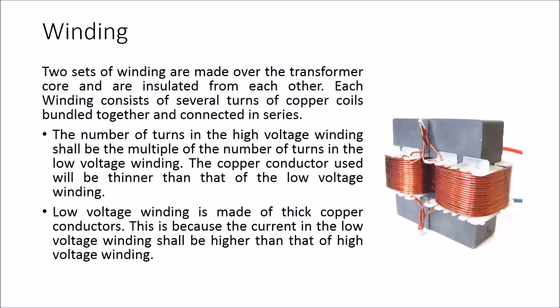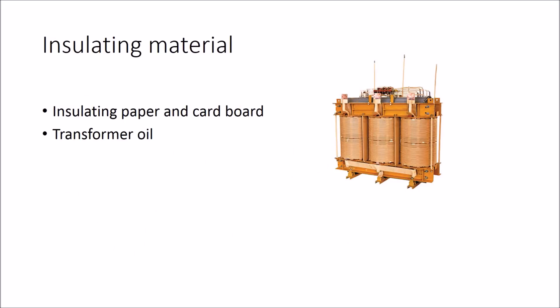Two sets of windings are made over the transformer core and are insulated from each other. Each winding consists of several turns of copper coils bundled together and connected in series. The number of turns in the high voltage winding shall be a multiple of the number of turns in the low voltage winding. The copper conductor used in the high voltage winding will be thinner than that of the low voltage winding, which is made of thick copper conductors because the current in the low voltage winding is higher. Insulating paper and cardboard are used in transformers to isolate the primary and secondary windings from each other and from the transformer core.